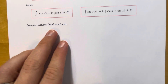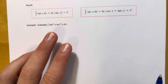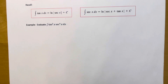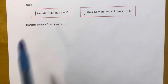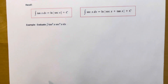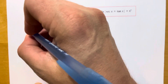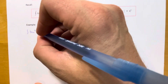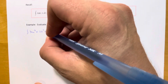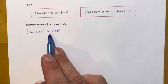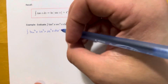Let's start with the first example: evaluate the integral of tangent squared of x times secant to the fourth of x. Our tangent does not have an odd power, but our secant does have an even power, so we use case A. We rewrite this as the integral of tangent squared times secant squared of x times secant squared of x dx — saving one secant squared to use as a du in a later step.